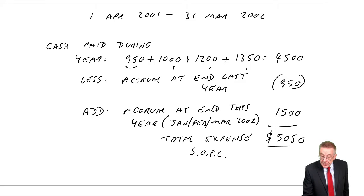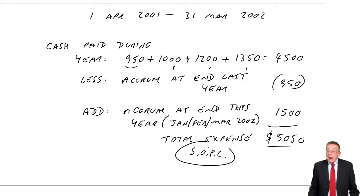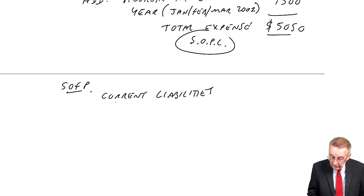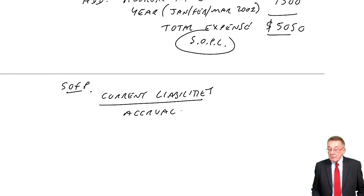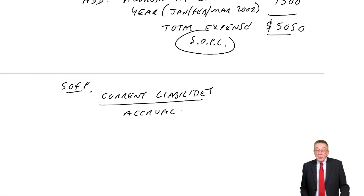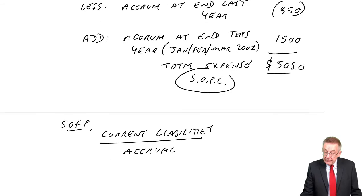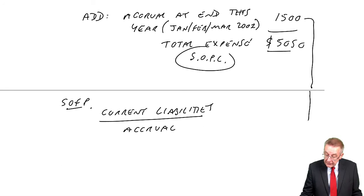Which we'd only paid to December, so we owe for January, February, March. And so the total expense for this year, which will appear on the Statement of Profit or Loss, £4,500 minus £950, plus £1,500, is £5,050. So there's the expense. What about the Statement of Financial Position? Well, under the heading current liabilities, accruals or accrued expense, is the amount owing at the end of the year, which was January, February, March, which was £1,500.